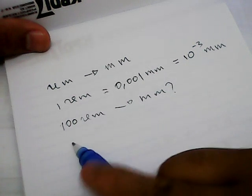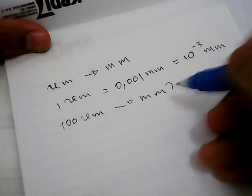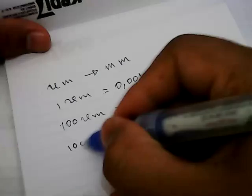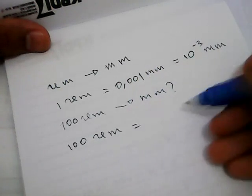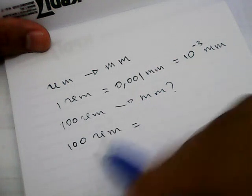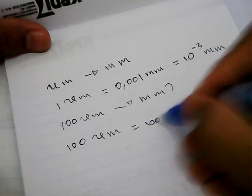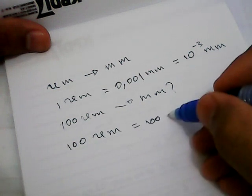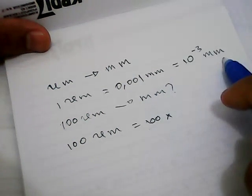To solve this problem, the first thing you need to do is write down 100 micrometers and give it an equal sign. Then you write down 100 again, and you need to multiply this 100 with this number.